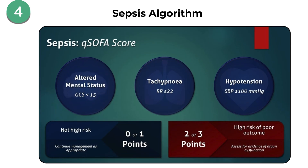There's also the QSOFA score. This helps you quickly identify patients at risk of sepsis by looking at their respiratory rate, mental status, and blood pressure. A score of two or more indicates a higher risk. Click on the video in the corner above to learn it fully.